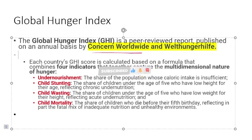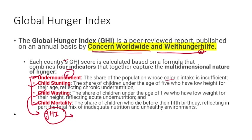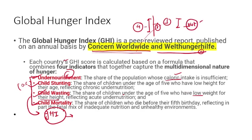The Global Hunger Index is released by Concern Worldwide and Welthungerhilfe. It has 4 indicators: under-nourishment (whether calorie intake is sufficient), child stunting (children below age 5 whose height is reduced relative to their age due to under-nutrition), child wasting (low weight-to-height ratio in children), and child mortality (children not reaching their 5th birthday). All four are related to inadequate, chronic under-nutrition.